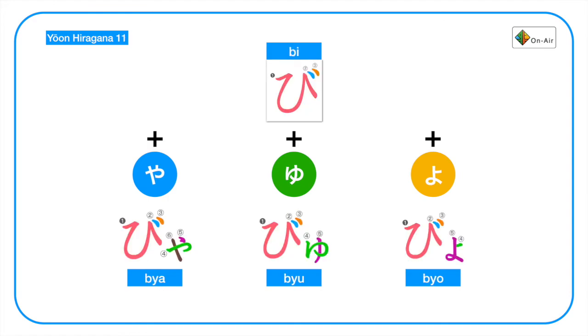The last dakuon letters, we have bi. The hi plus double dot is bi. So plus ya, yu, yo, we have bya, byu, byo. Again, bya, byu, byo.